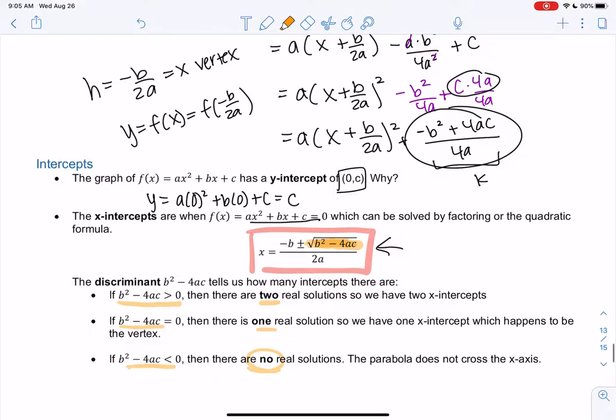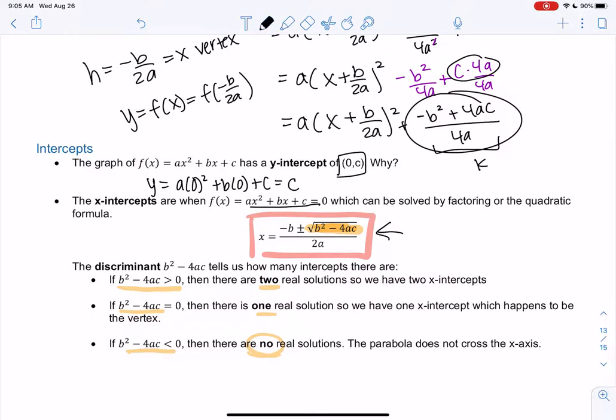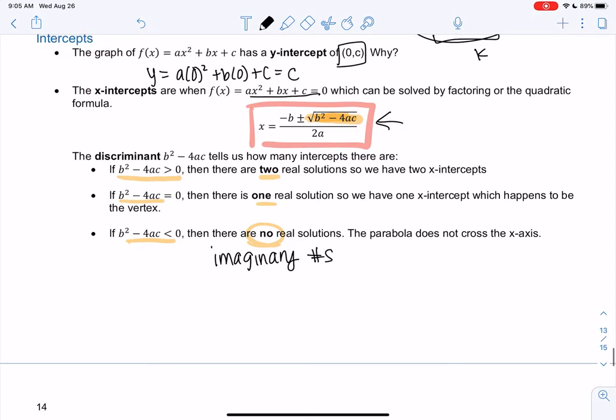And then when it's negative, we have no solutions, because the square root is imaginary. Because we get imaginary numbers. And so how does that affect the x-intercepts? So when it's greater than 0, we'll get a graph that crosses twice, two x-intercepts.